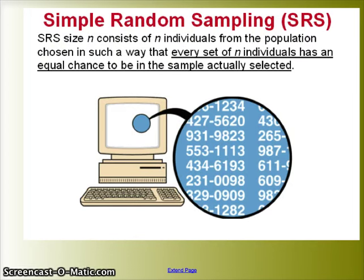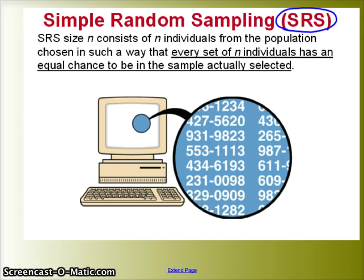The definition for simple random sampling is difficult, but let's see if we can get our head around it. Simple random sampling is sometimes abbreviated SRS, and you'll hear your teachers talking about taking an SRS — your book will use that as well. An SRS of size N — size 5, for example — consists of five individuals from the population chosen in such a way that every set of five individuals has an equal chance to be in the sample actually selected.